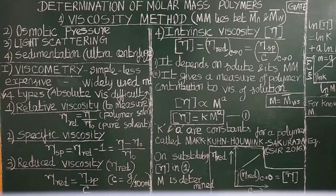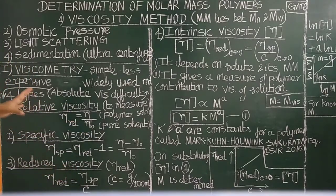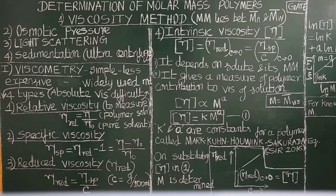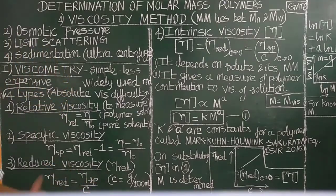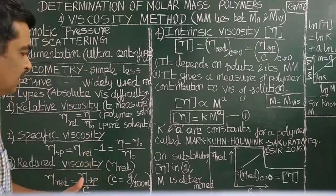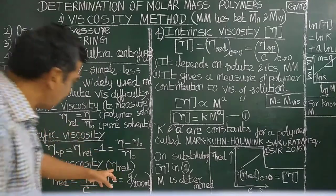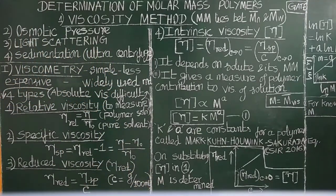Reduced viscosity is equal to specific viscosity divided by concentration. The concentration units are gram per cc, gram per 100 ml, or gram per 100 cc.